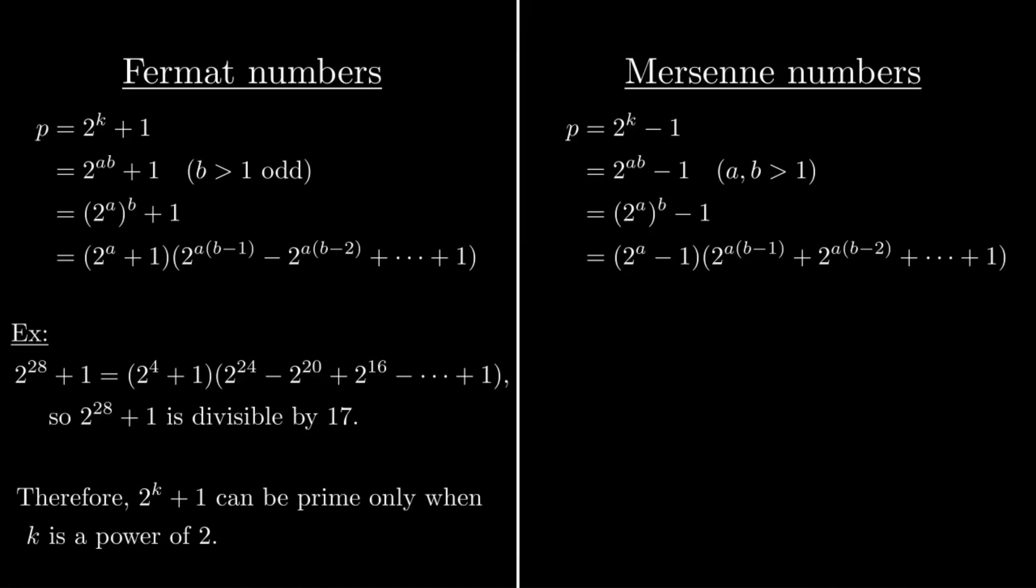So we have a non-trivial factorization, and that means it can't be prime. So, for example, 2^65 - 1 is divisible by 2^5 - 1, and also 2^13 - 1. So if we're looking for primes that are 1 less than a power of 2, the only exponents we should check are themselves prime.